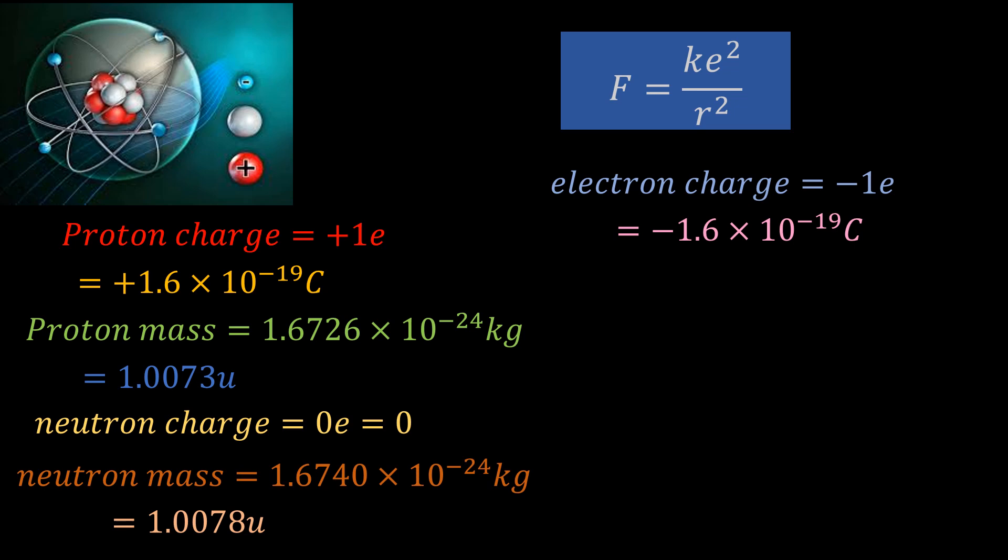So if you enclose an electron and a proton in a sphere, the net charge enclosed will be zero. Mathematically, the net charge enclosed will be -1e + 1e, which is zero.